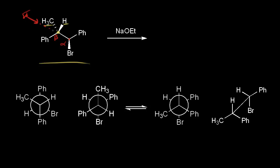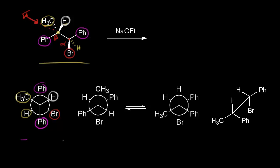For the Newman projection of this reaction, the hydrogen (in white) goes up and to the right, the methyl group goes up and to the left, and the phenyl group goes down — that's the front carbon. For the back carbon, the bromine goes down and to the right, the hydrogen on the alpha carbon goes down and to the left, and the phenyl group goes straight up. Notice that this time the beta hydrogen is not antiperiplanar with the bromine, so we're going to need to rotate about the single bond.